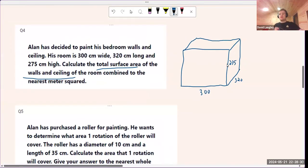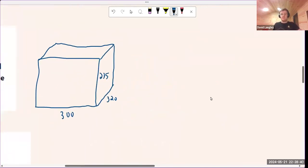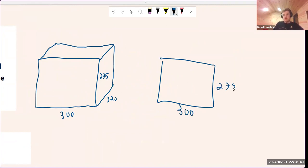And we want to calculate the total surface area of the walls and ceiling, so we're not going to use the floor. How do you find surface area? We want to use the shapes. So one shape I can see straight away is this front square, which is going to be a rectangle, 300 by 275, the width by the height.